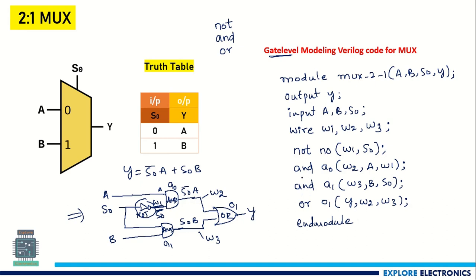This is how we use gate level modeling technique to write the Verilog code for the 2-to-1 multiplexer. This approach requires the logical gate circuit.